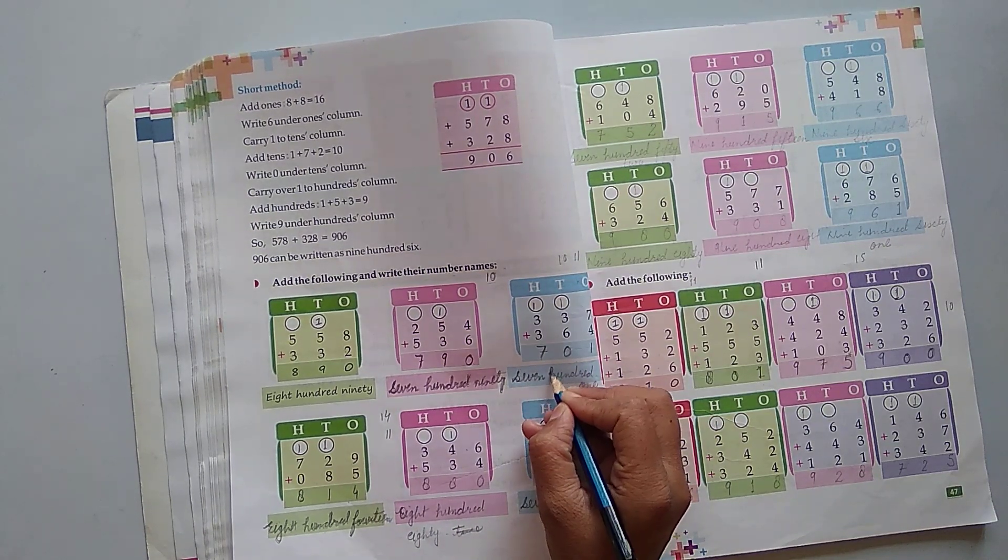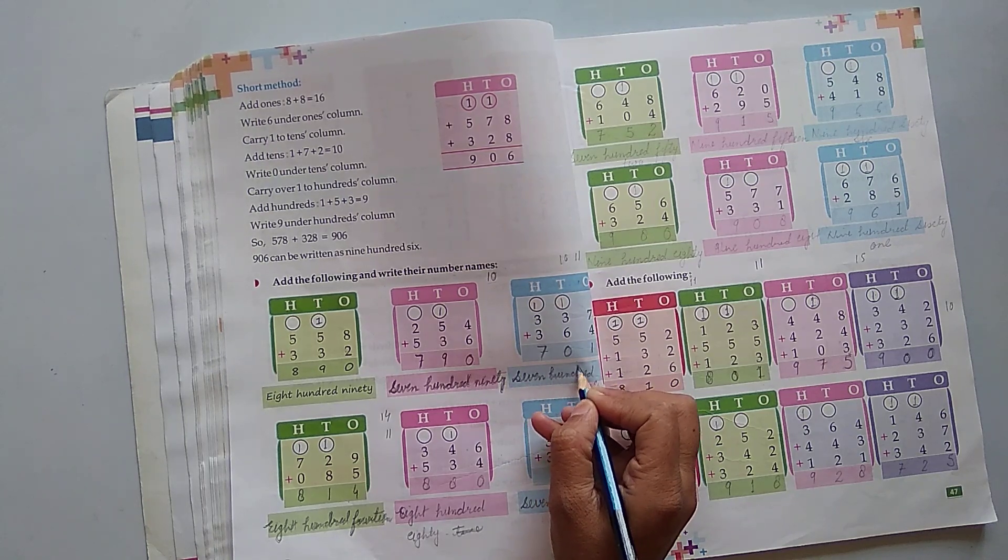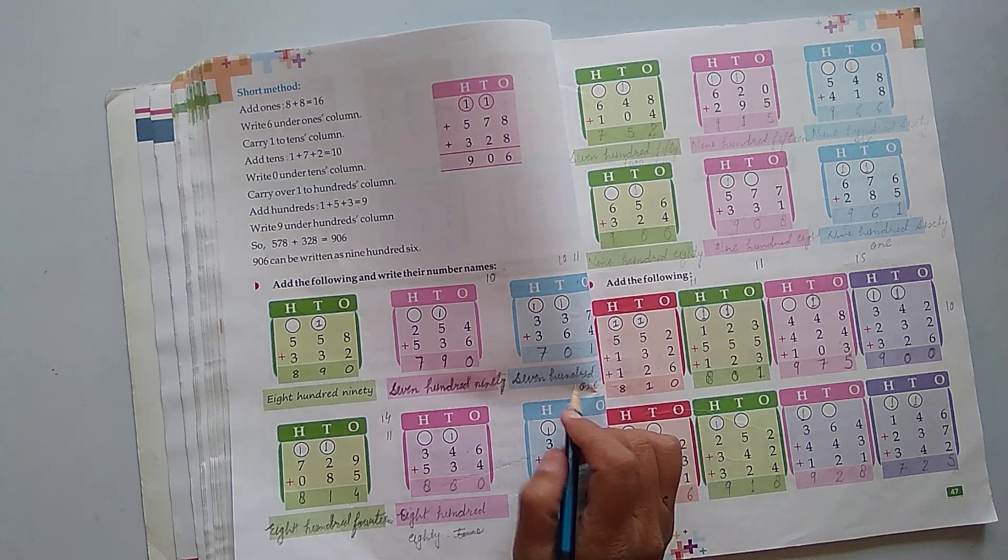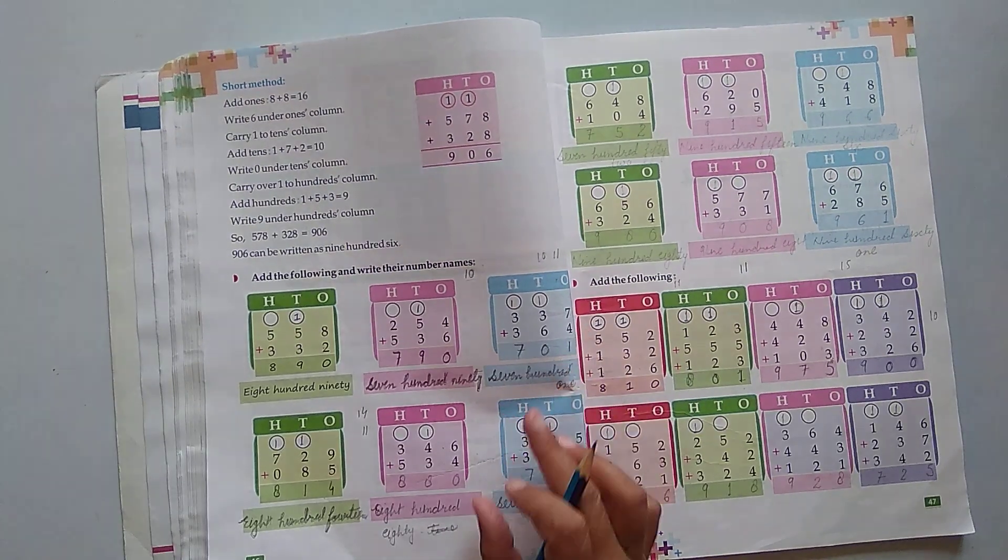Seven hundred one. 7, hundred, 1. Right? 7 and 1. Okay? This way we will complete it.